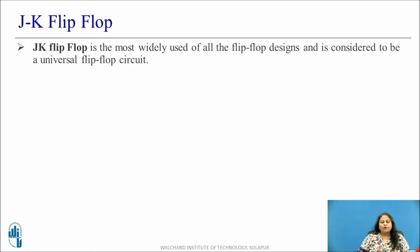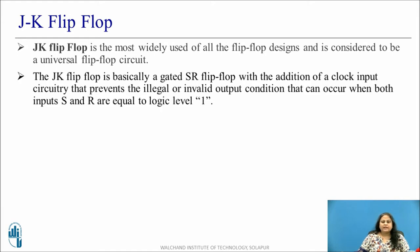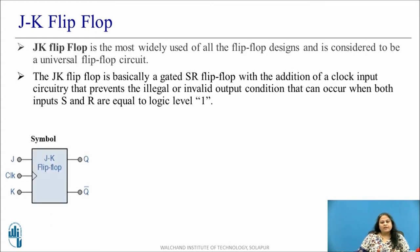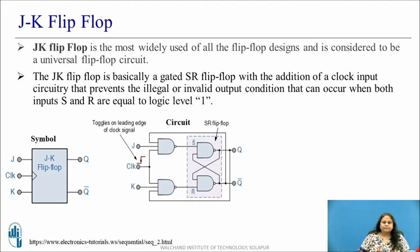The JK flip-flop is the most widely used flip-flop and is considered to be a universal flip-flop circuit. It is basically a gated SR flip-flop with the addition of a clock input circuitry that prevents the invalid output condition that can occur when both inputs S and R are at logic 1. The figure shows the symbol of a positive edge-triggered JK flip-flop, where J, K and clock are inputs and Q and Q-bar are outputs. This circuit is obtained by adding the clock input to the SR flip-flop.